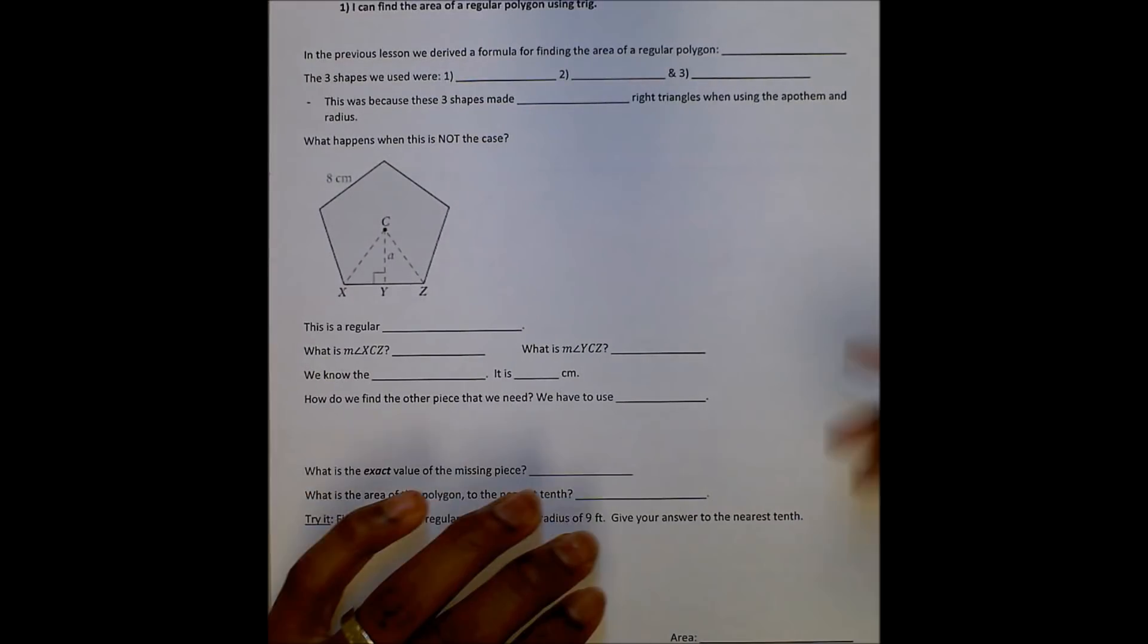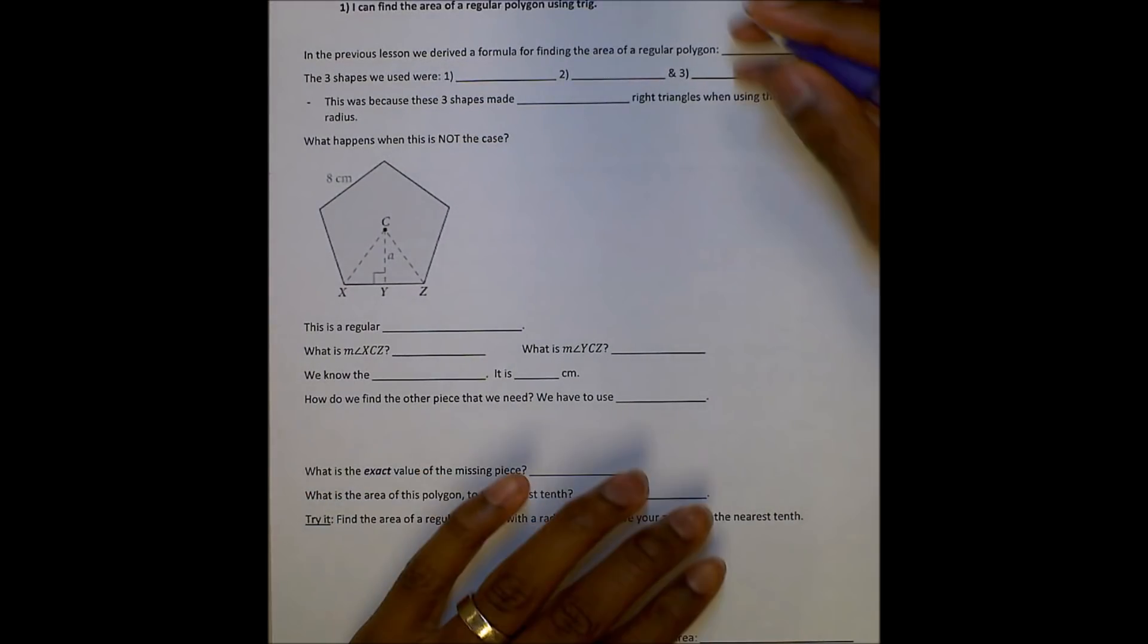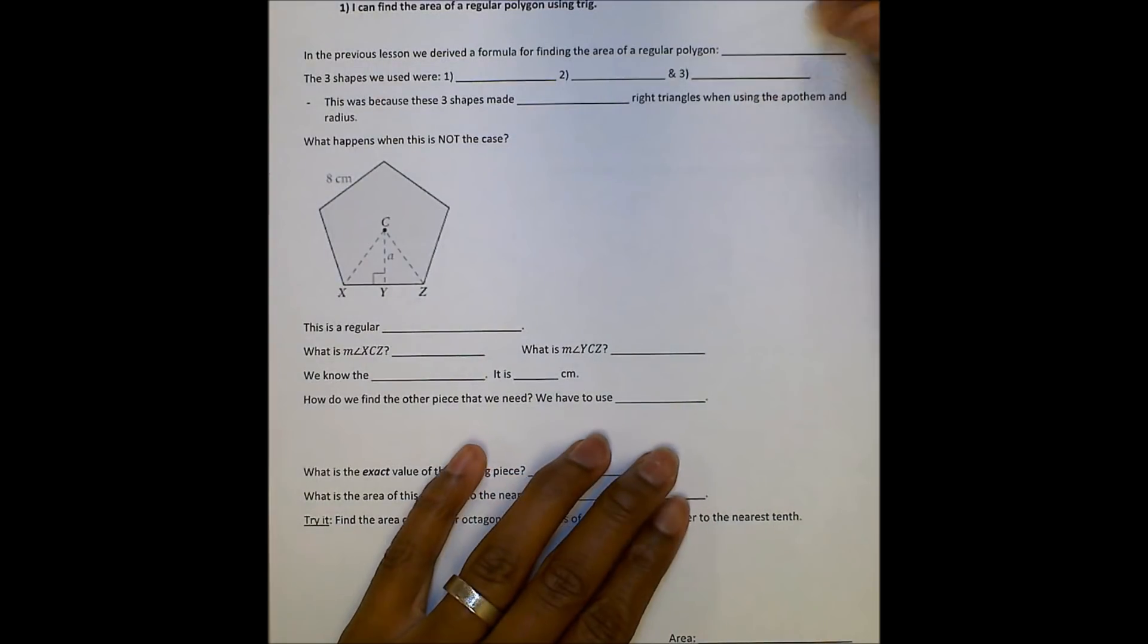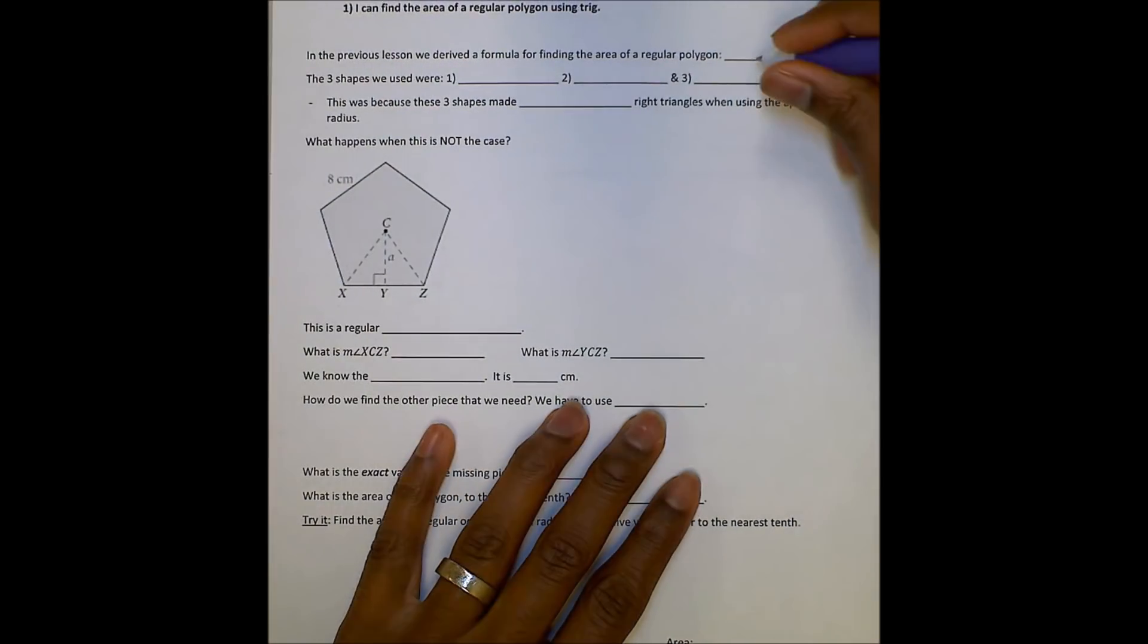Hey guys, Mr. Milton here. Today we're going to talk about finding the area of regular polygons number two. So today we're going to find the area of regular polygons using trig. You see the last lesson was using special right triangles. And the formula that we derived for finding the area of a regular polygon was the area of a regular polygon was one half the apothem times the perimeter.